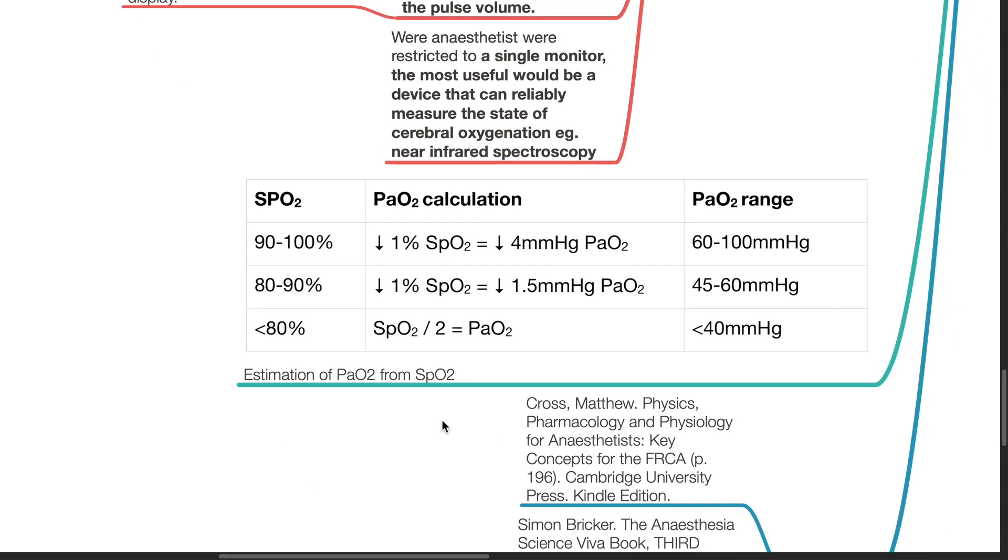To estimate PaO2 from SpO2, this is a general guide. With a range of SpO2 from 90 to 100%, every 1% drop of SpO2 equates to 4 mmHg drop in PaO2. From a SpO2 range of 80 to 90%, every 1% drop in SpO2 equates to approximately 1.5 mmHg drop in PaO2. And for SpO2s less than 80%, an estimation of the PaO2 will be to divide the SpO2 by 2.